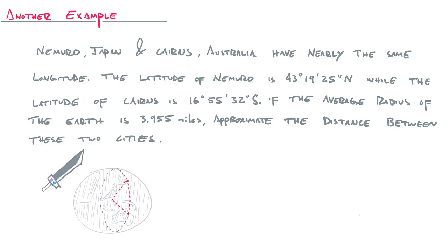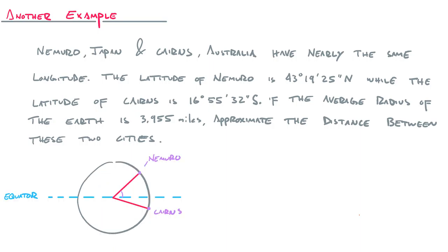Now, to make this a little bit easier to see, I thought what we could do is just cut the earth along this specific longitudinal circle and then rotate this thing so we have a better picture of what's going on. Okay. So I drew the equator. We've got Nemuro at the top. We've got Cairns at the bottom here. Nemuro has a latitude measurement of 43 degrees, 19 minutes, 25 seconds. So that's what this angle is.